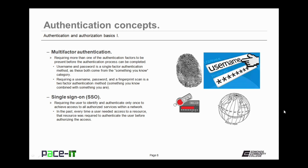Multi-factor authentication requires that the factors come from different categories. So requiring a username, password, and a fingerprint scan is a two-factor authentication method — those come from the something you know category combined with the something you are category. Then there is single sign-on, or SSO. This is requiring the user to identify and authenticate only once to achieve access to all authorized services within a network.